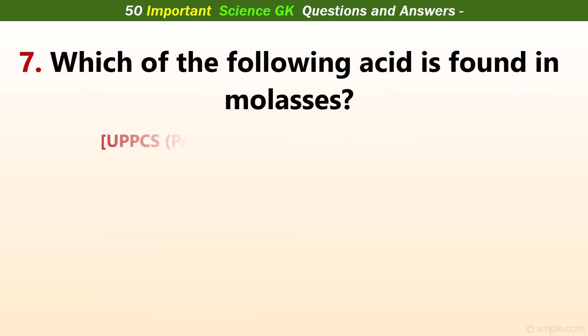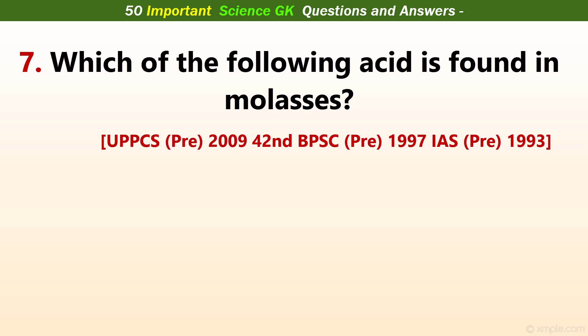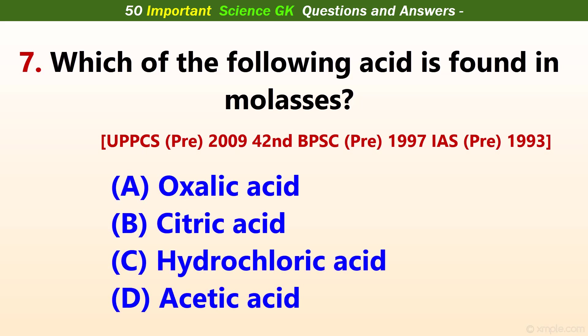Which one of the following acids is found in molasses? Answer D: Acetic acid.